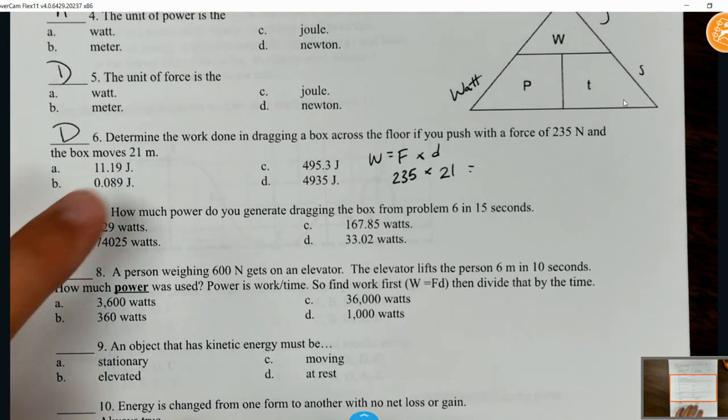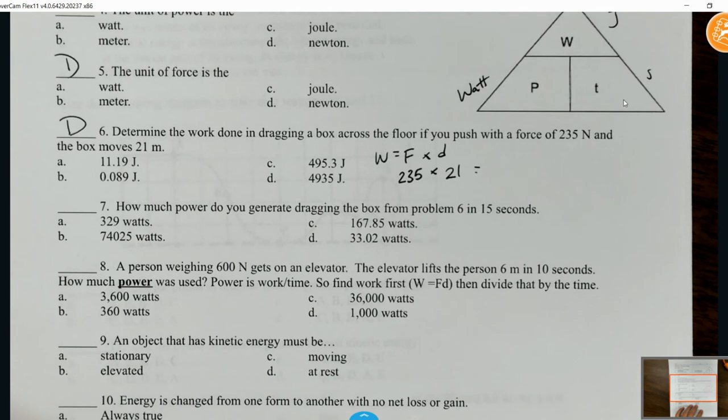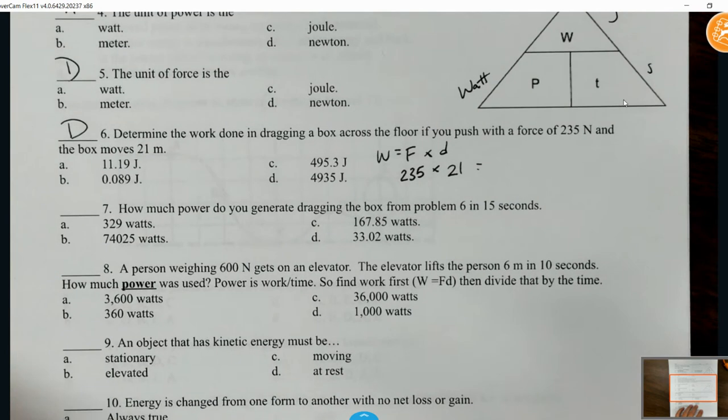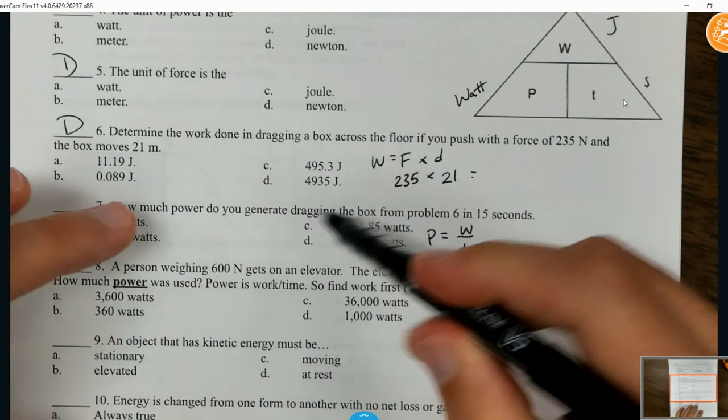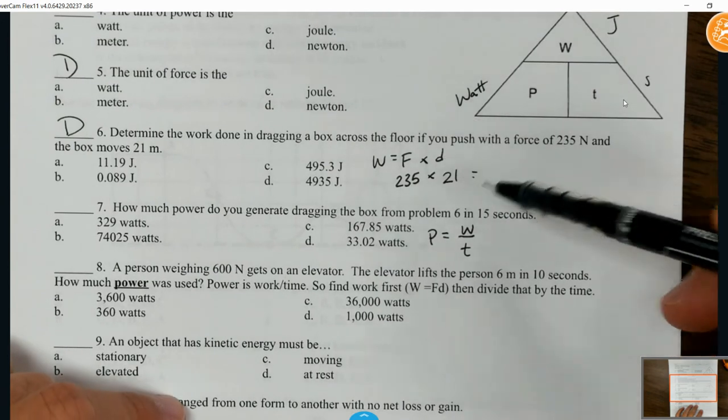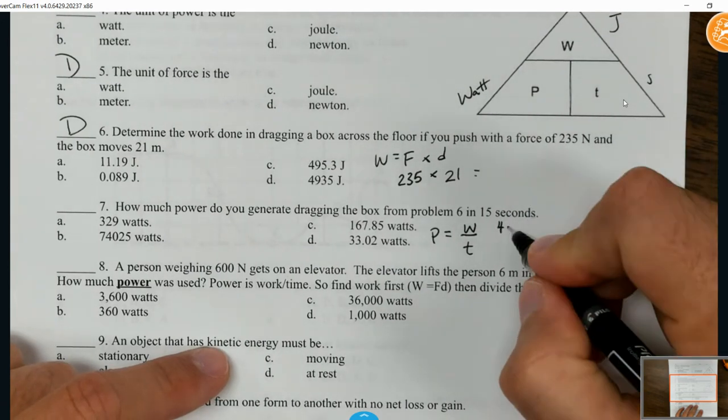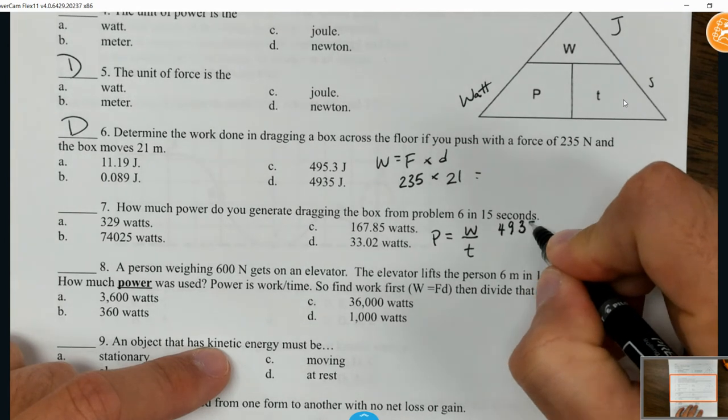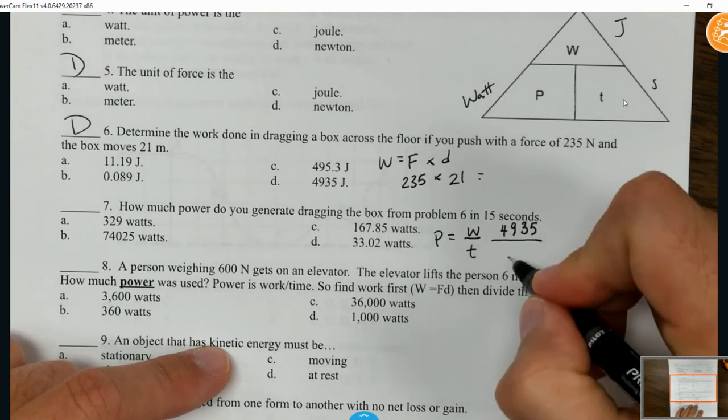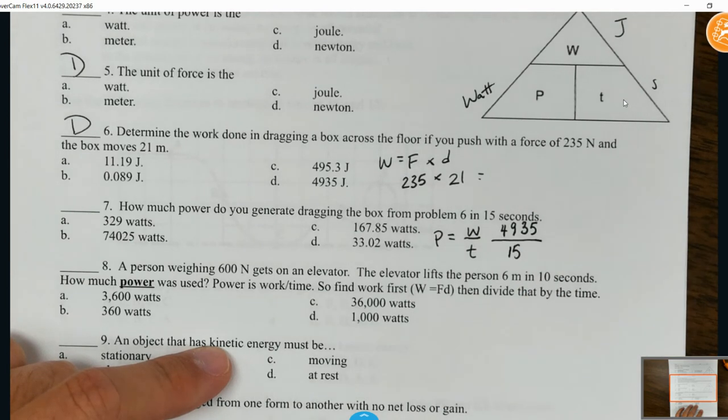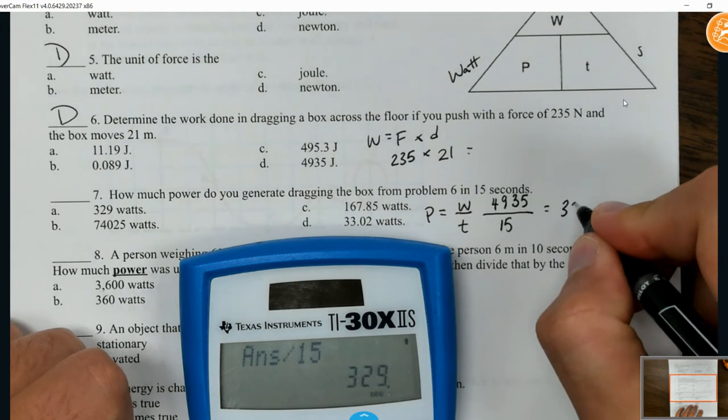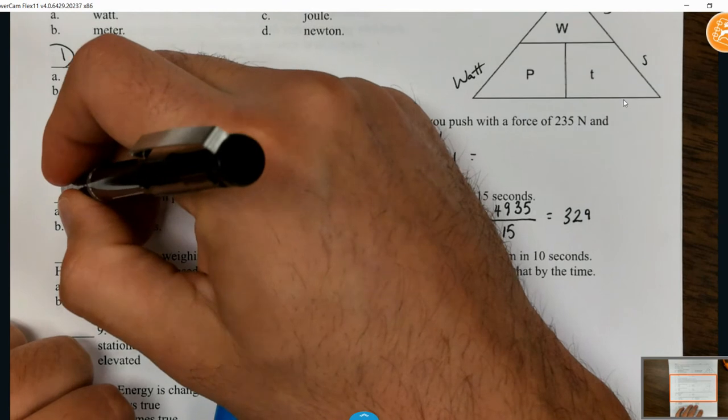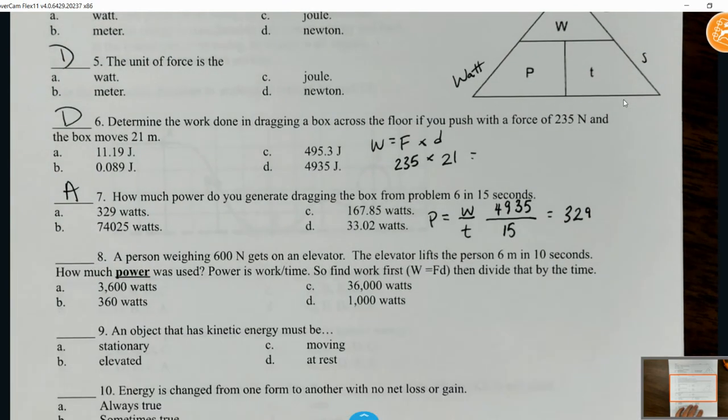Number seven: how much power do you generate dragging that box from problem six in 15 seconds? Power is work divided by time. We need the answer from number six. If you don't get the right answer there, you're going to get this one wrong as well. Take that answer and divide it by 15, and you get 329 watts.